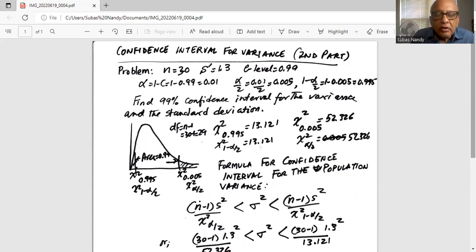Earlier we have found out that for degrees of freedom 29, chi-square 0.995 is 13.121 and chi-square 0.005 is 52.326.